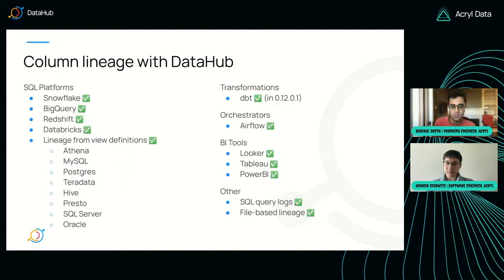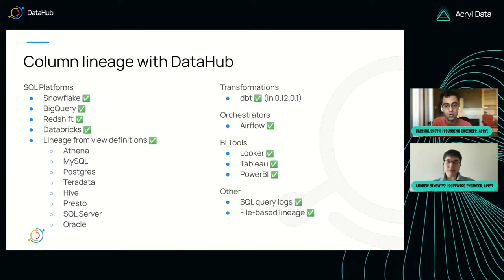Let's take a step back and survey how end-to-end column-level lineage works within DataHub and what sources support it. Previously available were Snowflake and BigQuery. In the past few months we've been slowly chipping away at integrations with a ton of other sources. We now support column-level lineage for Redshift, for Unity Catalog via Databricks, and we also parse view definitions from a ton of different SQL sources to generate column-level lineage for views specifically.